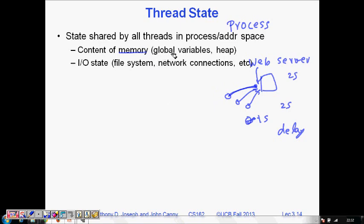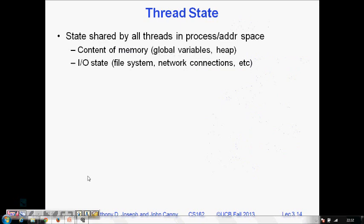Your heap, whatever you do on memory malloc, all are shared by the different threads. If you spawn four threads T1, T2, T3, T4, they all will be in one process P1 sharing the global variables. Input/output state like file system, network connections, they all share.